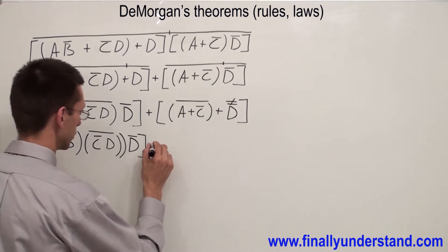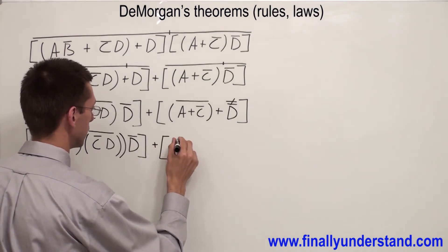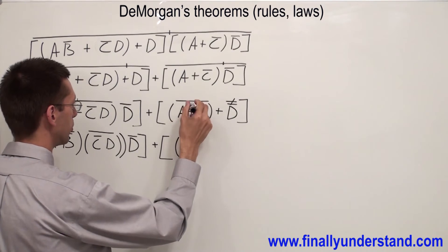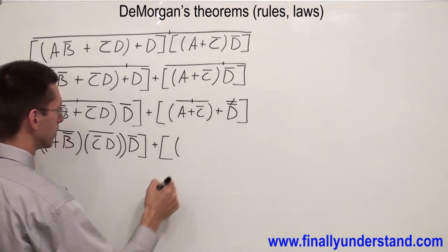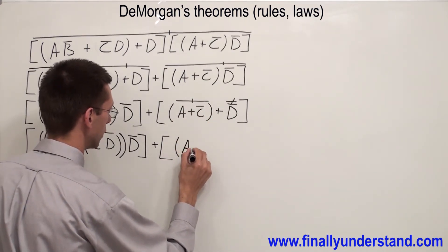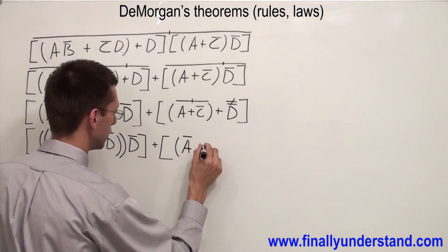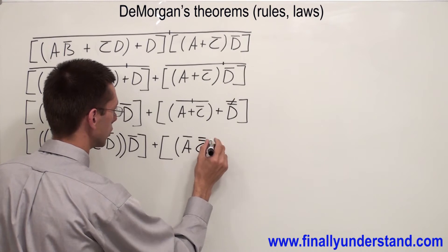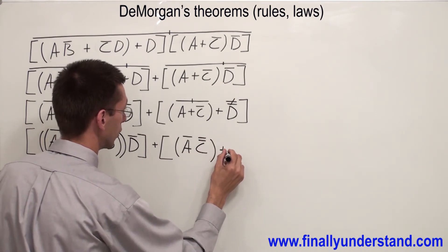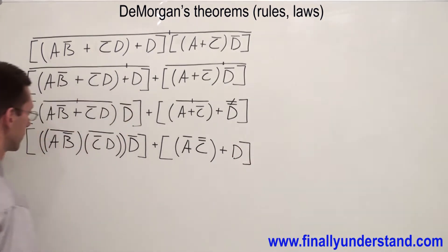Now let's do the second brackets. I have this bar — this bar has to be cut at this point. So I'm going to have Ā AND C, double-NOT, OR D. Close bracket.